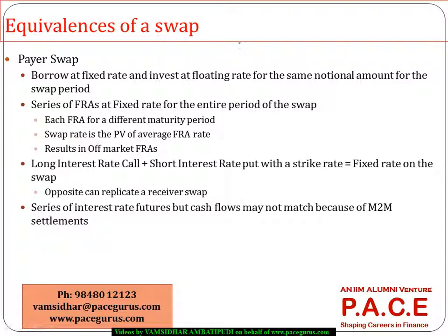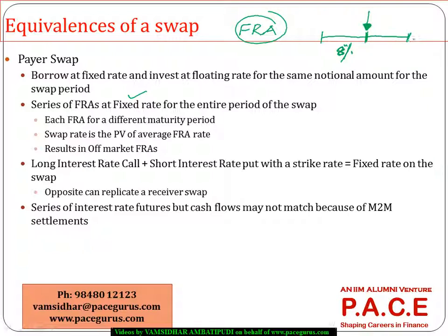The next thing we are talking about is a payer swap as a series of FRAs. In a forward rate agreement, for a particular time period, I fix the interest rate — let's say at 8%. Whatever may be the market rate, which is the floating rate, I will be paying this fixed rate of 8% only. That is the characteristic of FRAs. In case of a swap, I am not making one payment — I am probably making a series of payments, but I am paying 8% only at each of the periods, whatever the market rate at that point.